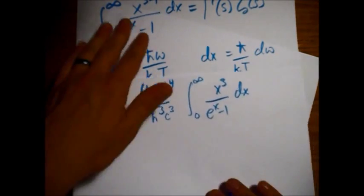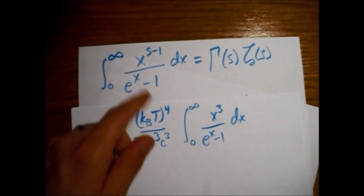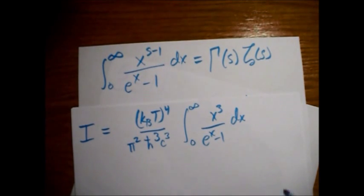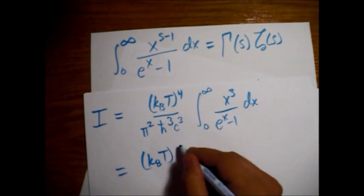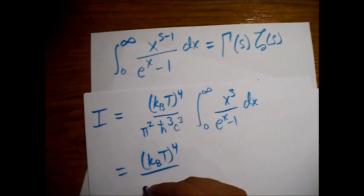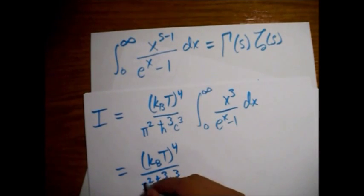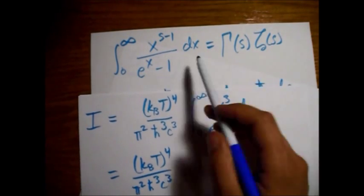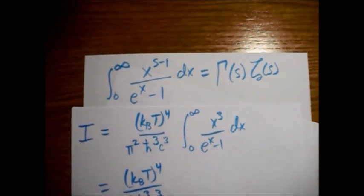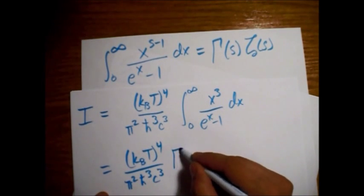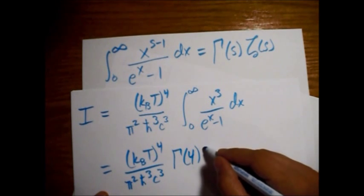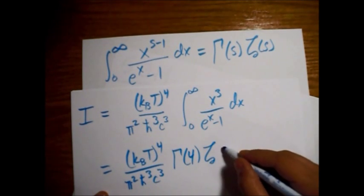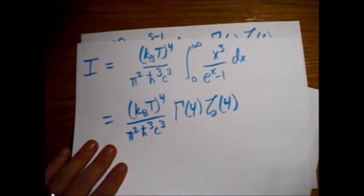Okay. So now we come and we look at our integral up here, and we see that this is going to be equal to... All right, so s in this case, so s minus one is equal to three, so s is equal to four. A gamma of four. Gamma function. And we want to say a function of four.